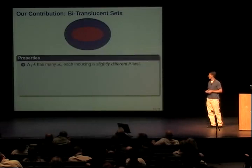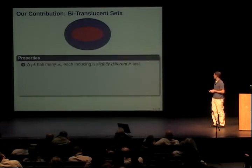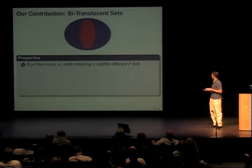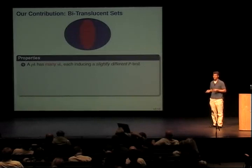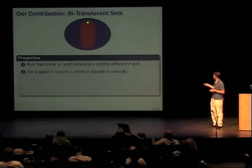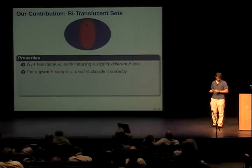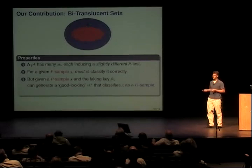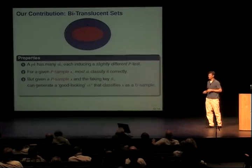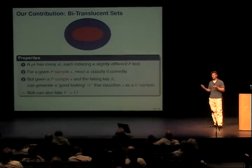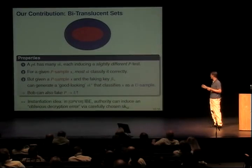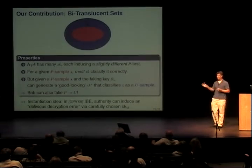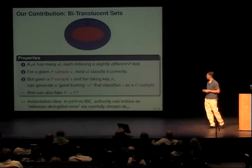One of our contributions is a structure we call bi-translucent sets, to take care of the receiver problem. The public key now has many secret keys, and the P sets are slightly different for each. If you pick a P sample, most secret keys will classify it correctly, but given the faking key, you can generate a secret key that makes the P sample fall outside — forcing it to look like a U sample. This allows Bob to fake a P as a U, and using the previous encoding, everything works. The instantiation uses a property of the GPV identity-based encryption scheme where you can cause a decryption error obliviously, so the user doesn't know it — an interesting property we exploit for deniability.